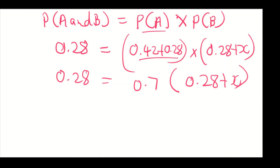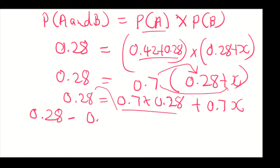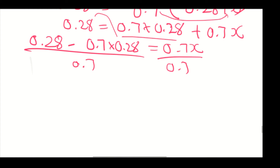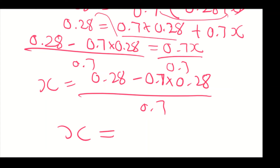Expanding: 0.28 equals 0.7 times 0.28 plus 0.7X. Transposing gives 0.28 minus 0.7 times 0.28 equals 0.7X, then dividing by 0.7 gives X equals (0.28 minus 0.7 × 0.28) divided by 0.7, which equals 0.12.